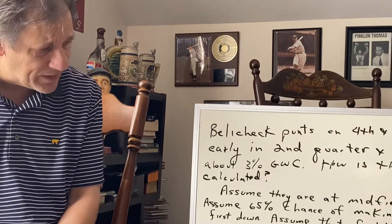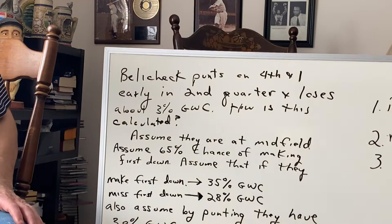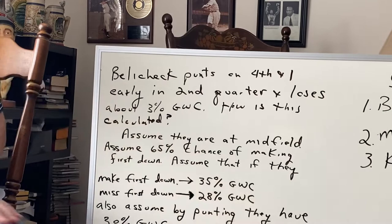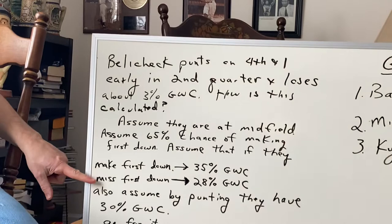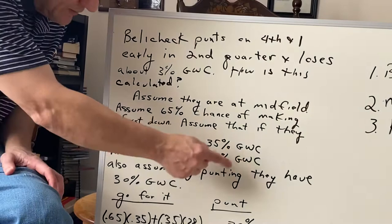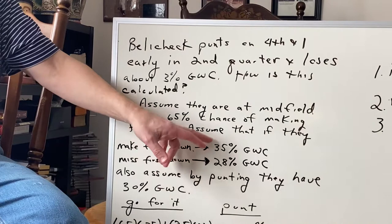We make some assumptions. Assume that they are at midfield. And assume that they have a 65% chance of making a first down on 4th and 1. We'll also assume that if they make a first down, they then have 35% game-winning chances, because we update our game-winning chances — now they have a first down at midfield instead of facing a 4th down. Let's also assume that if they miss the first down, they have 28% game-winning chances. How do we get these numbers? Based on historical norms — if we go back in history and look at similar scenarios, these numbers are pretty close under these situations.